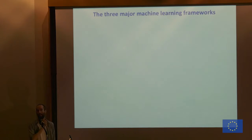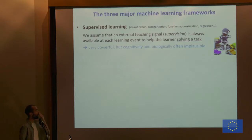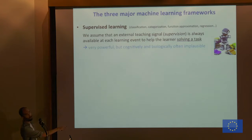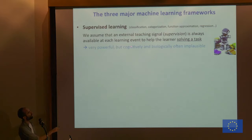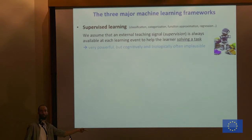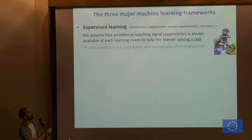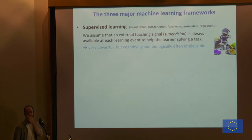The three major learning frameworks in machine learning: the first is supervised learning, sometimes called classification, categorization, function approximation, or regression. We assume that a teaching signal — supervision — is always available when we want to learn. The agent tries to perform a task, gives an answer, and the teacher says yes or no. It is a very powerful way for learning complex tasks, but it is quite implausible cognitively and biologically.